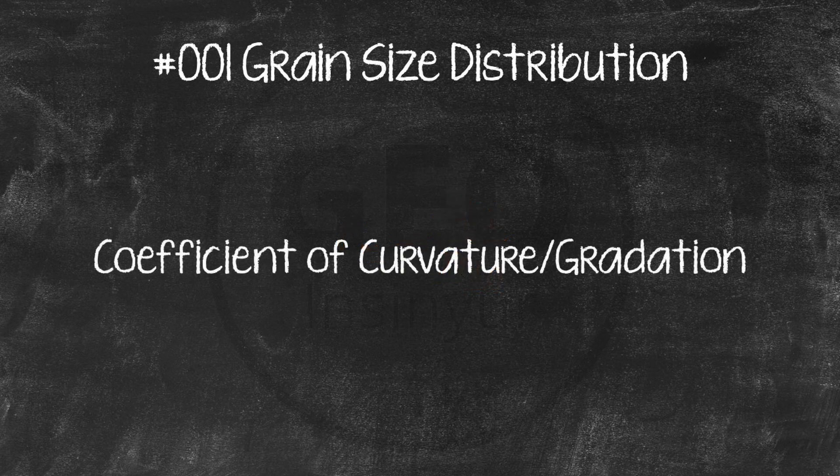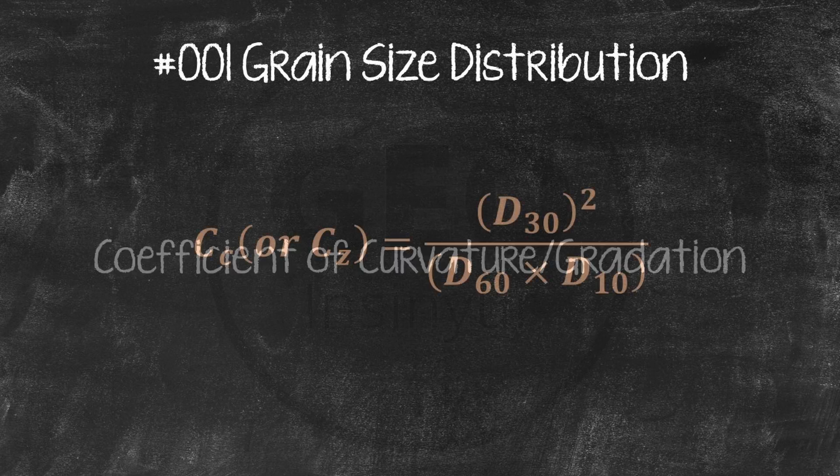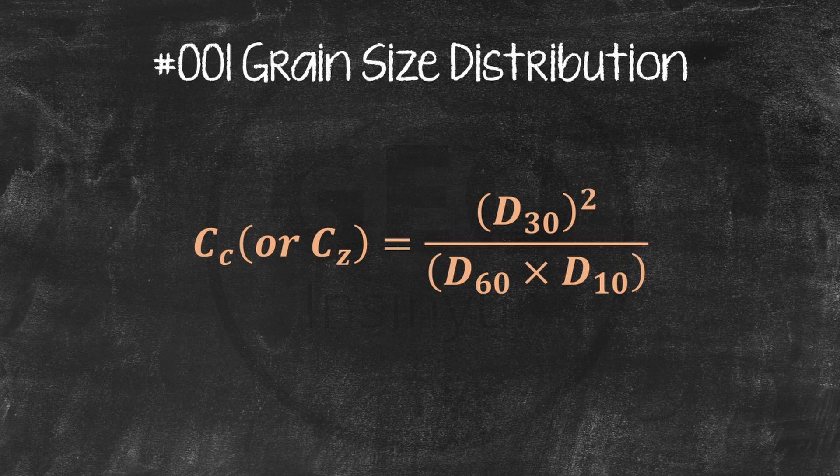Coefficient of curvature gradation. The coefficient of curvature gradation, CC or CZ, defines the continuity of a curve and captures gaps, if any. CC or CZ is d30 squared divided by d60 times d10.